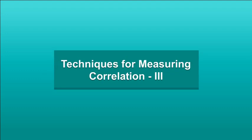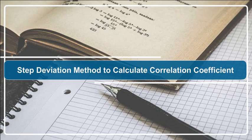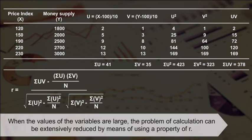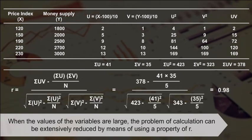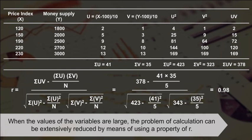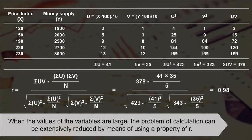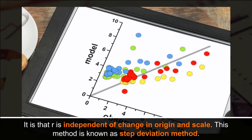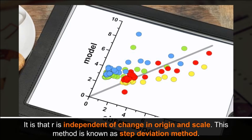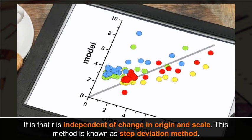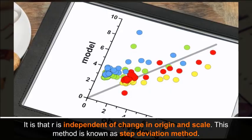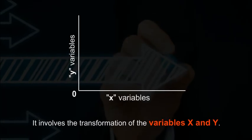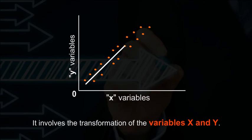Step Deviation Method: When the values of variables are large, the problem of calculation can be extensively reduced by using the property that r is independent of change in origin and scale. This method is known as the step deviation method, and it involves the transformation of the variables X and Y.